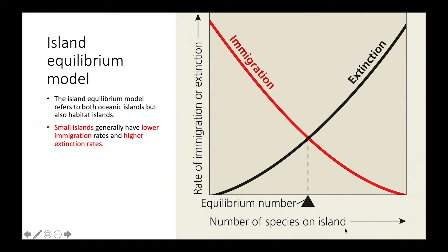With the island equilibrium model, something that we see is that small islands generally have lower immigration rates and higher extinction rates. This is because if you have a smaller island, you're going to have higher species density, with more organisms living close together. If there are already a lot of organisms on this small island, there's no incentive for other organisms to migrate there, and because there's a smaller region, we have more competition for resources, leading to higher extinction rates.